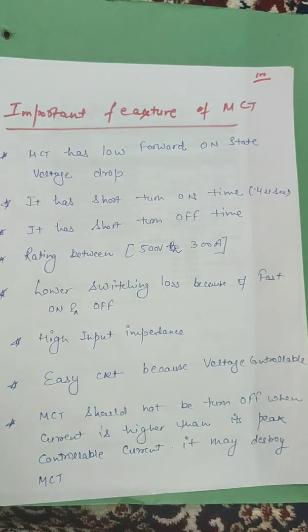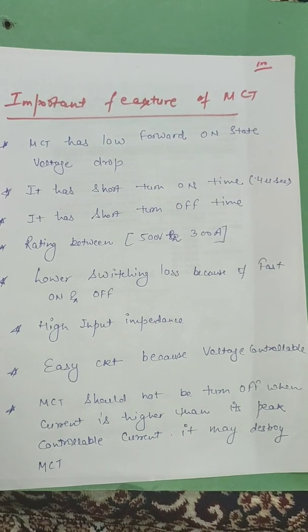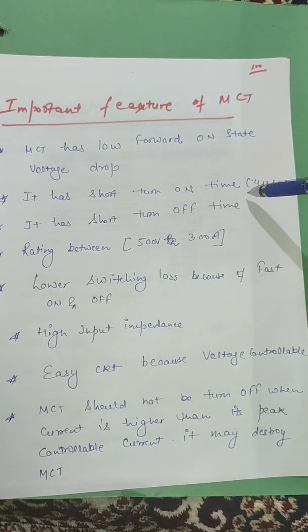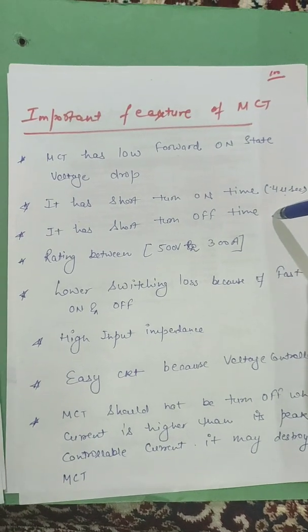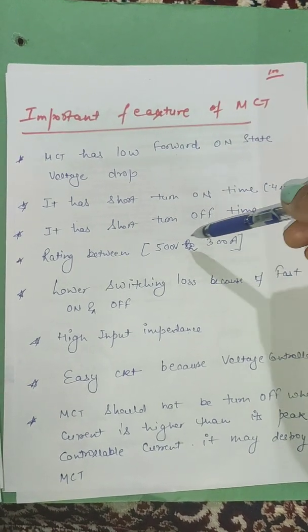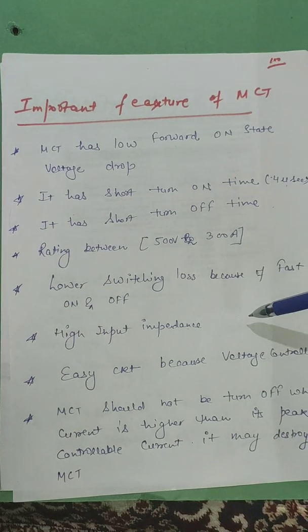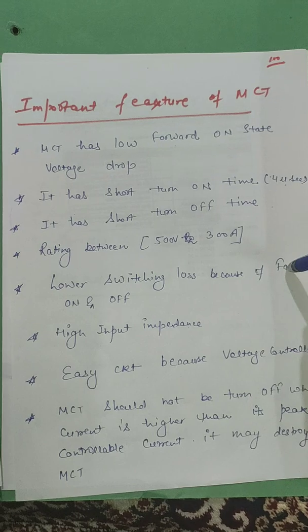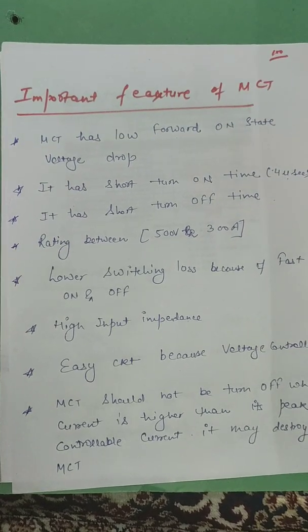These are some important features of MCT. MCT has low forward on state voltage drop. It has short turn on time and turn off time. It has very short turn on and turn off time. Rating is between 500 volt to 300 ampere. Lower switching loss because of fast on off.